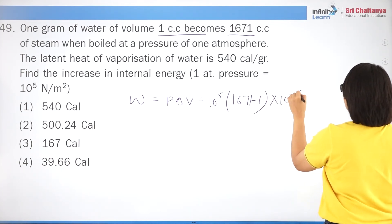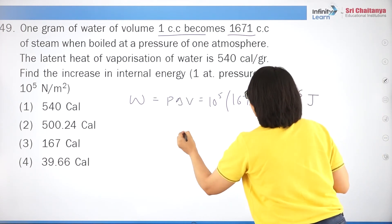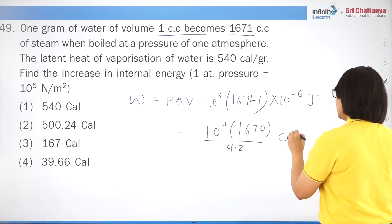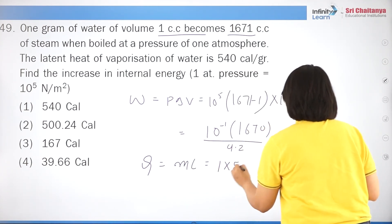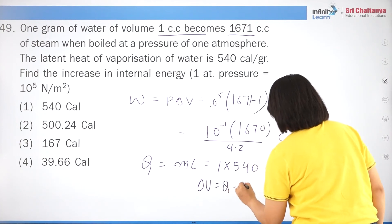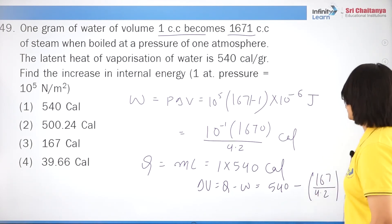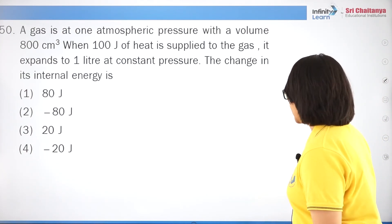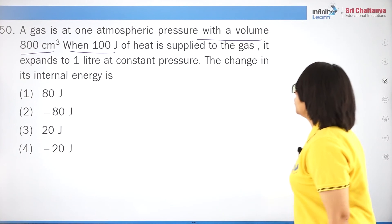Question 15: two bodies are thrown at 45° and 60° to the horizontal, attaining the same vertical height. Equating H1 = H2: u1²sin²45°/2g = u2²sin²60°/2g, so u1²×(1/2) = u2²×(3/4). Thus u1²/u2² = 3/2, giving u1/u2 = √(3/2), which is option 3.